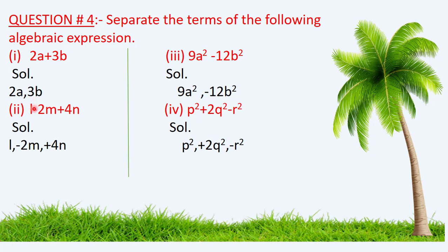In the second part of Question 4, the expression is l − 2m + 4n. In the solution, just insert a comma between the terms of the algebraic expression, and make sure to keep the signs too.